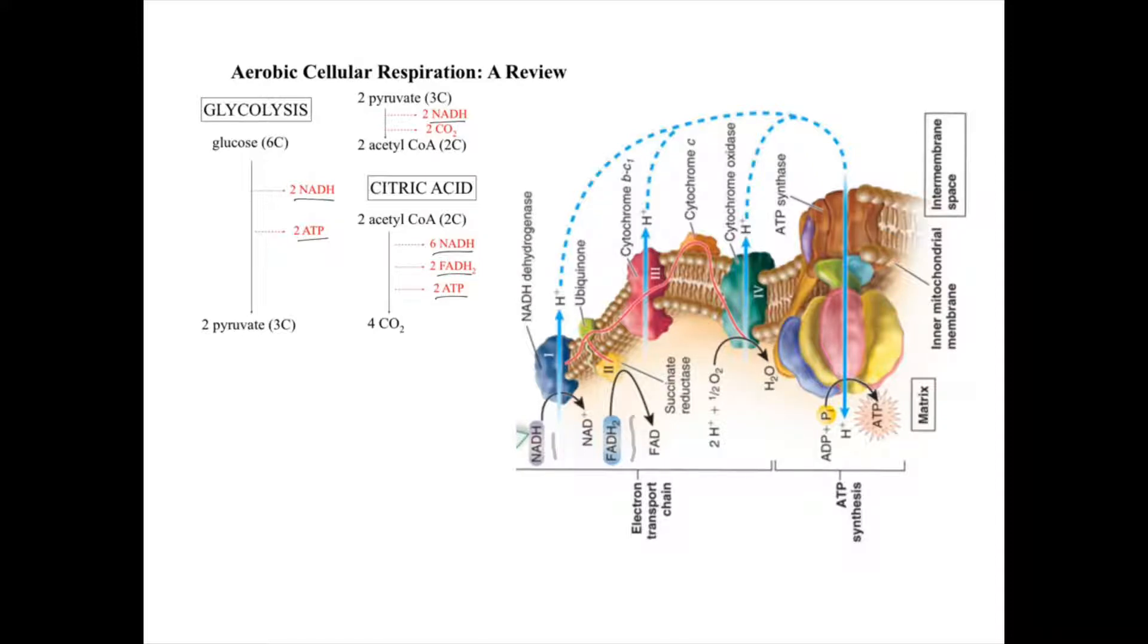As these guys are dropping them off, these electrons are being used by complex one to pump four hydrogens across the membrane from low to high. Then those electrons are shuttled over to complex three where four more hydrogens are pumped from low to high, creating a gradient. Finally, complex four pumps two more hydrogens across. This creates a gradient of high protons on one side of the membrane and low on the other.